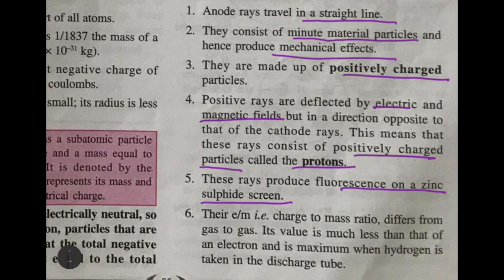These rays produce fluorescence on a zinc sulfide screen — if a zinc sulfide screen was placed in the path of these positive rays, it formed a bright fluorescent color. Their charge-to-mass ratio (e/m) is different from gas to gas. You'll learn about e/m in higher classes. The value was less than that of an electron, and it was maximum when hydrogen was taken in the discharge tube.